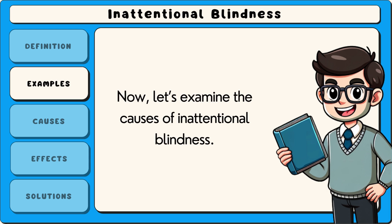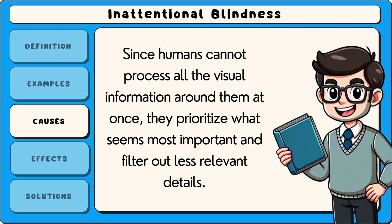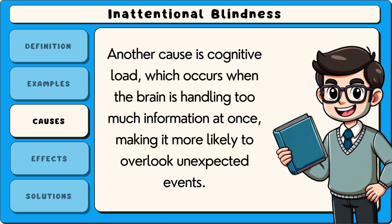Now let's examine the causes of inattentional blindness. One major cause is the brain's limited capacity for attention. Since humans cannot process all the visual information around them at once, they prioritise what seems most important and filter out less relevant details. Another cause is cognitive load, which occurs when the brain is handling too much information at once, making it more likely to overlook unexpected events.